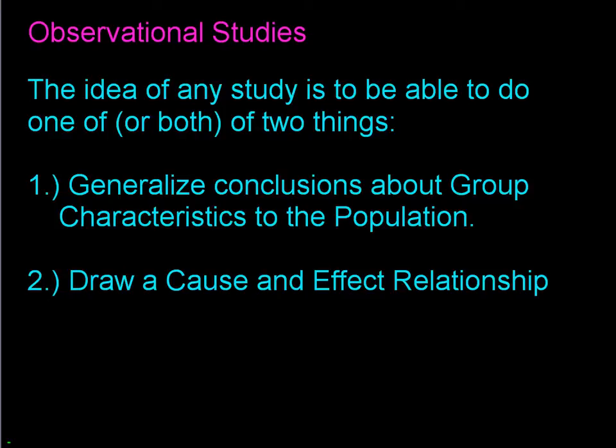In an observational study, it is important to obtain a sample that is representative of the corresponding population. To be reasonably certain of this, the researcher must carefully consider the way in which the sample is selected. The idea of any study is to be able to do one or both of the following: generalize the conclusions from a sample to the population, and draw a cause-and-effect relationship.